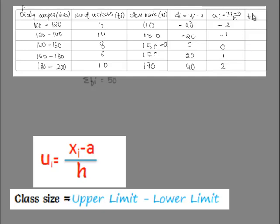And finally, here we get the product of fi and ui as minus 2 into 12, that is minus 24, minus 14, 0, 6 and 20.